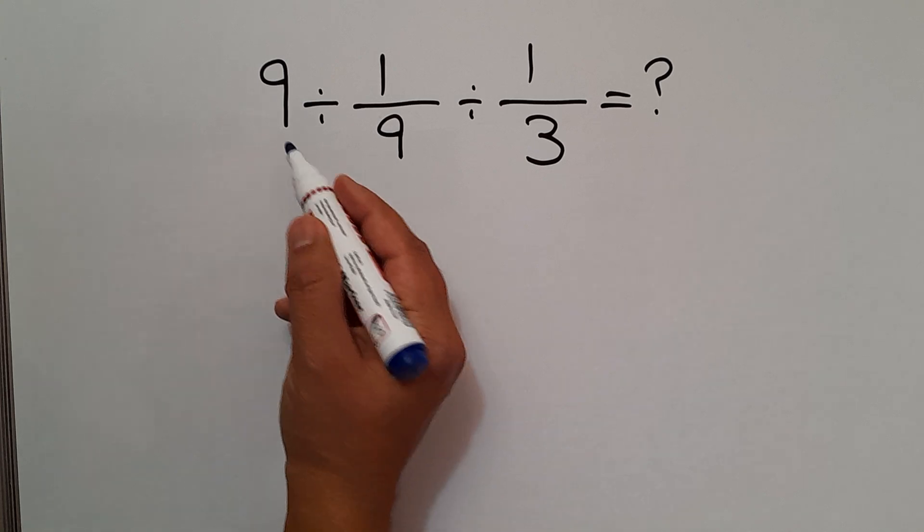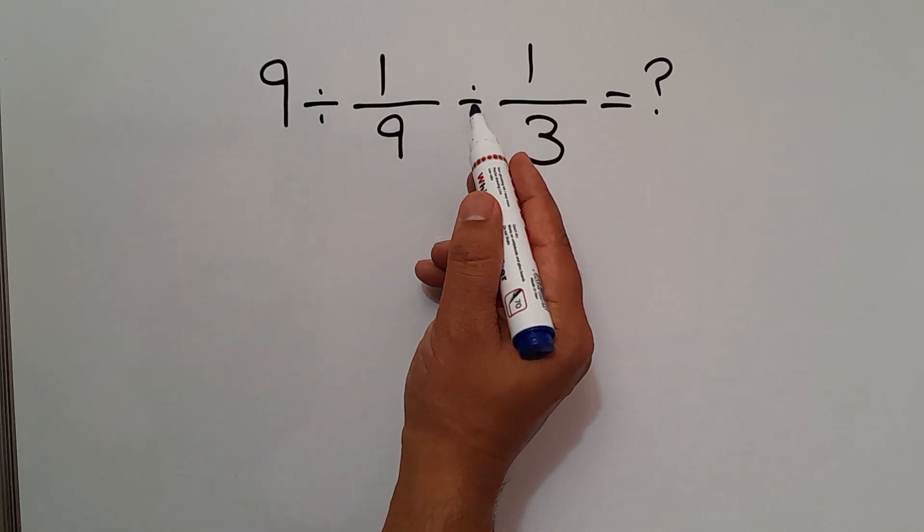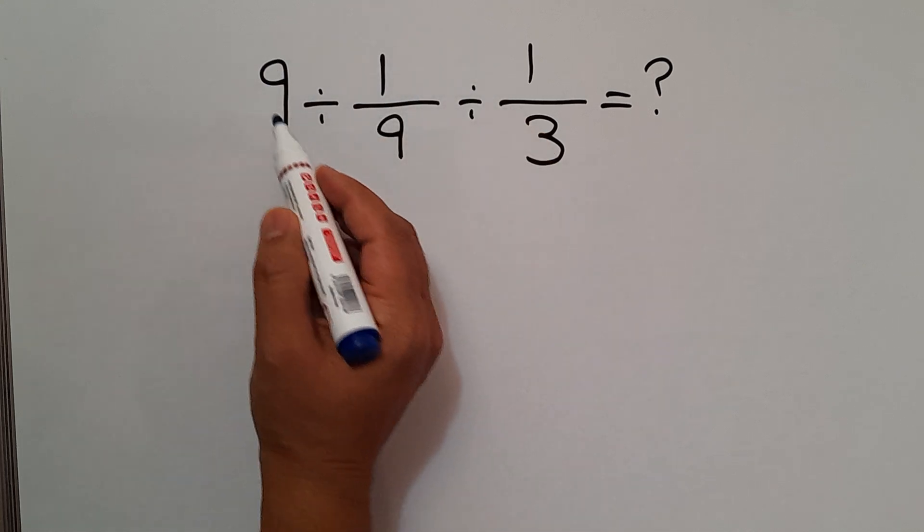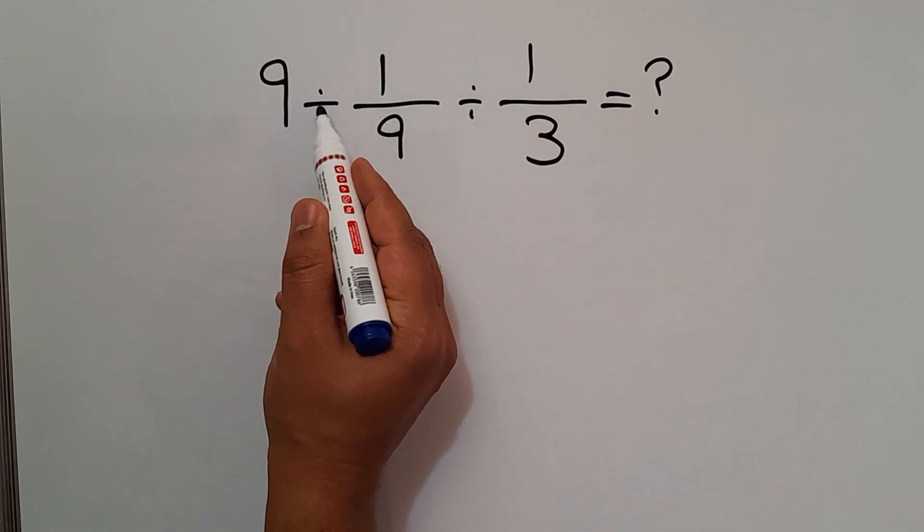In this expression we have two divisions, and as we know we have to work from left to right. So first this division: 9 divided by 1 over 9.